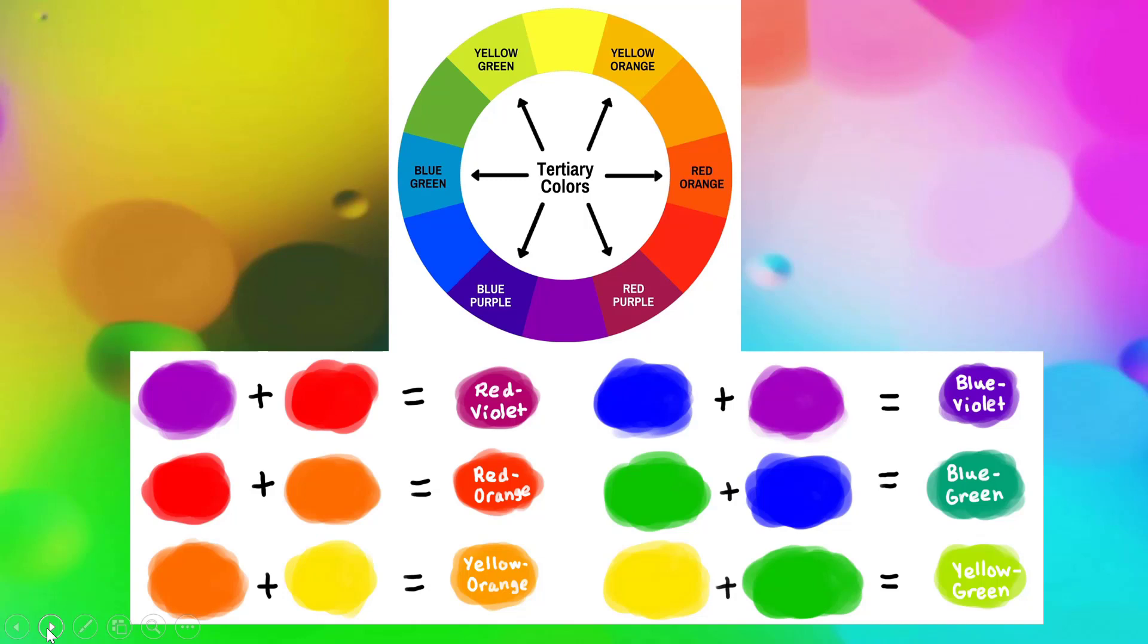If I were to take purple or violet and mix it with red, I get a color called red-violet. Sometimes people call it red-purple. Red-violet, red-orange, yellow-orange, blue-violet, blue-green, and yellow-green are the six tertiary colors. They always go in between the primary and the secondary color that make them.